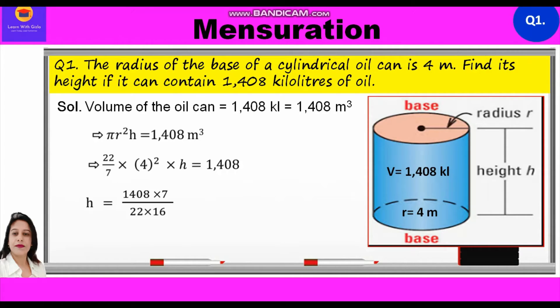4 square is 16. Now, we will cross multiply and find the value of h. h is equal to 1408 into 7 upon 22 into 16, which is equal to 28 meters. Therefore, the height of this oil can is equal to 28 meters.